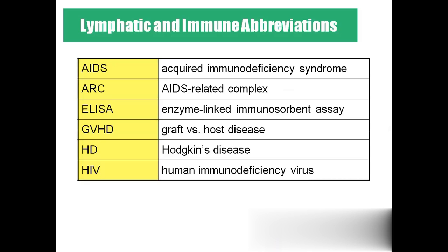Coming to the abbreviations: AIDS — acquired immunodeficiency syndrome, caused by the virus HIV. ARC — AIDS-related complex, which refers to early symptoms of AIDS such as weight loss and anorexia.